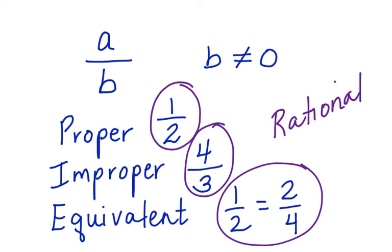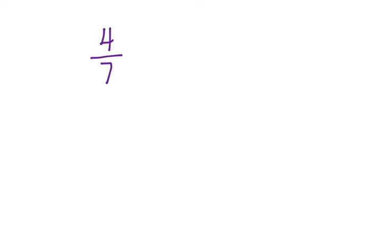Let's take a look at an example. Is this a rational number? Yes, it's a rational number because it's in the form A over B. What about ten over three? Again, it's a rational number.